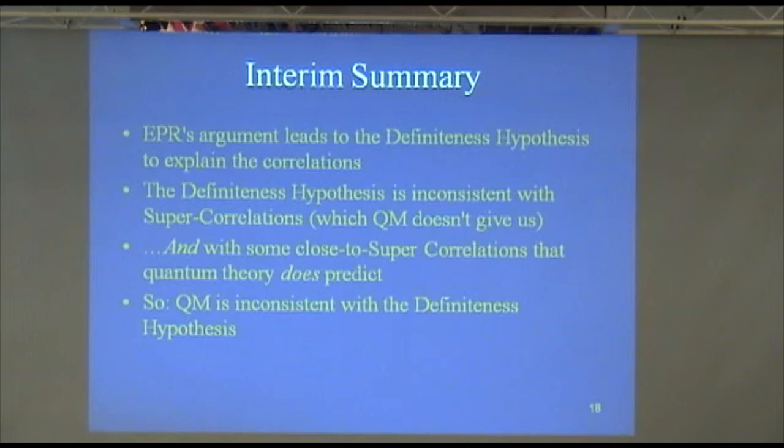Student asks: Is it a reasonable reformulation to say that the definiteness is the assumption that the measurement on one thing does not affect the measurement on the other? In other words, only the combination of the two measurements at once is a single entity. Professor responds: That's a way of putting it that many people would be happy with. Certainly the idea that the measurement here doesn't affect things over there.